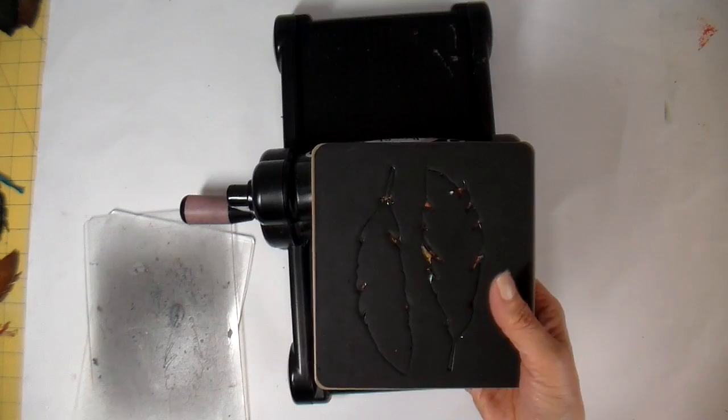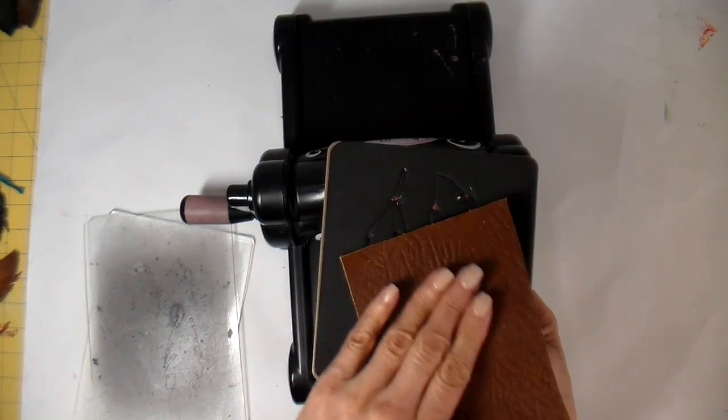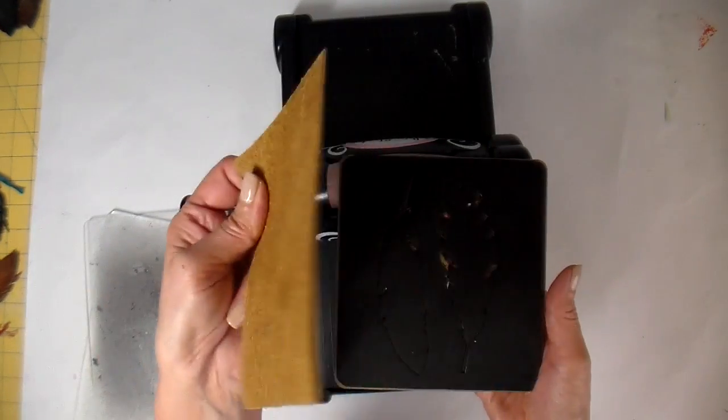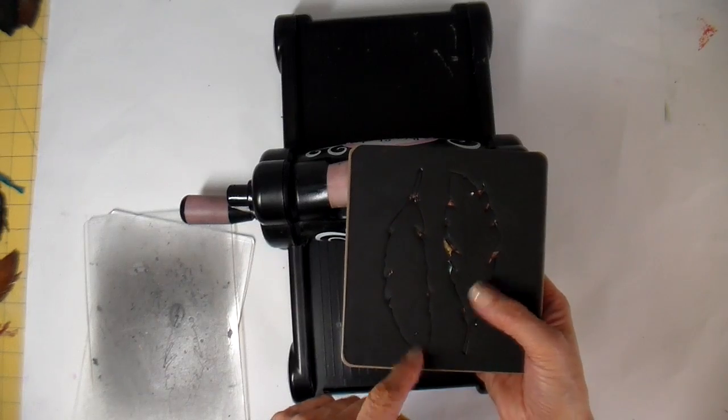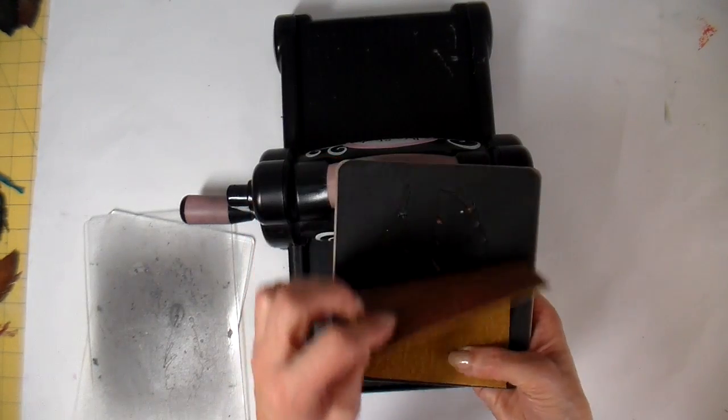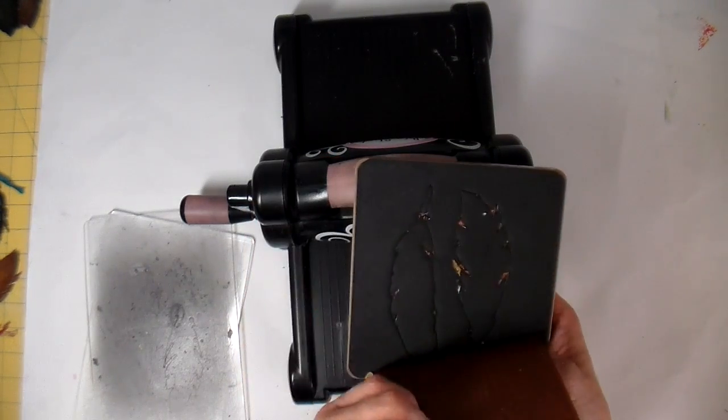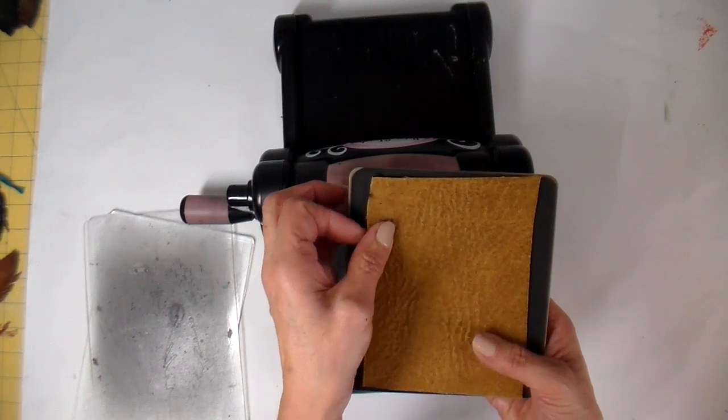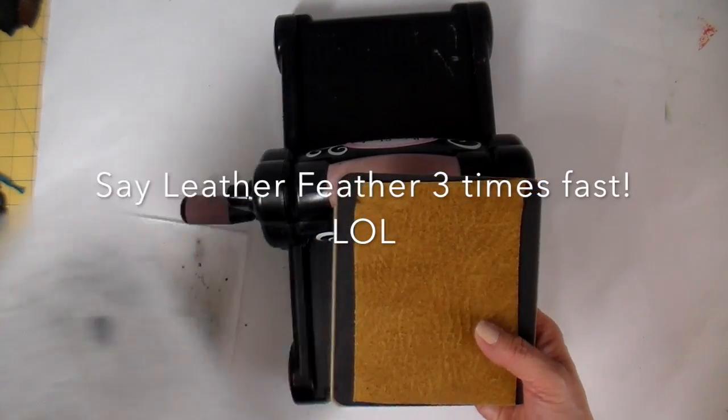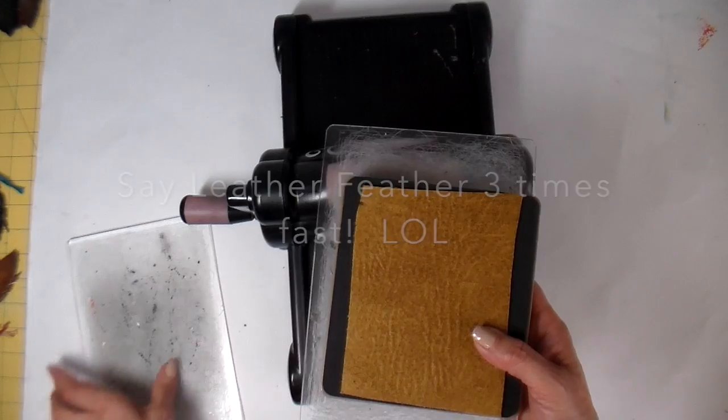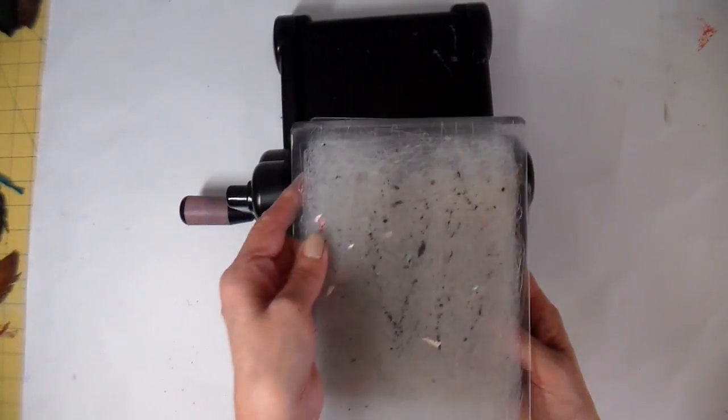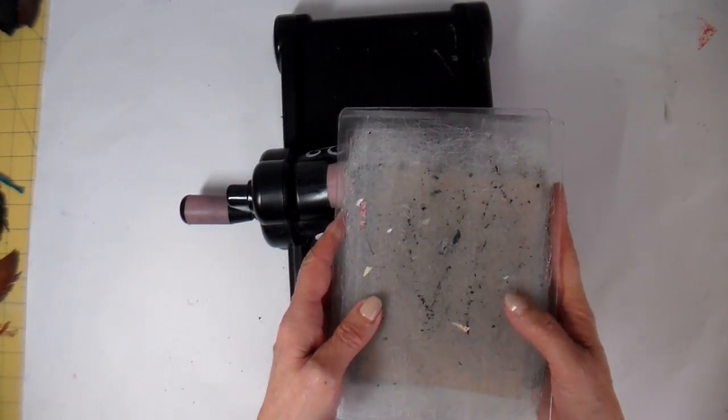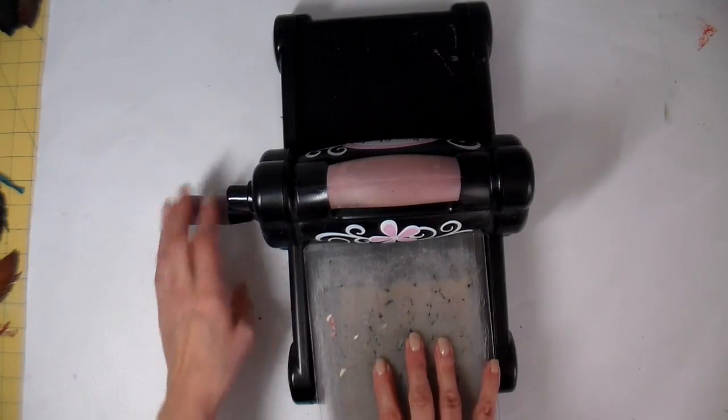I'm going to lay the leather so that the right side of the leather is facing down on top of the die, and just making sure that both of the feathers are covered with the leather. And then making my sandwich. And I'm going to go ahead and run it through.